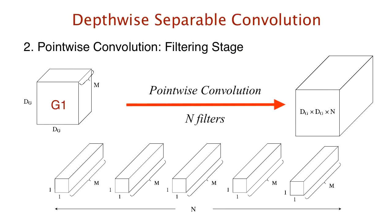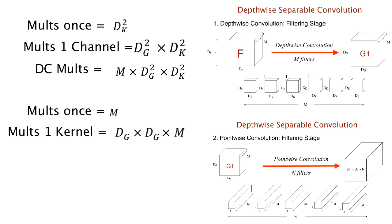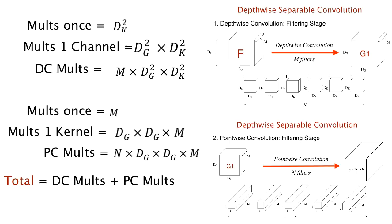For the pointwise convolution phase, the kernels have shape 1 × 1 × m, so one convolution requires m multiplications. Applied to the entire output of the first phase with width and height dg, the total for one kernel is dg² × m. For n kernels, this becomes n × dg² × m. The total number of multiplications is the sum of both phases: m × dg² × dk² + n × dg² × m, and we can factor out m × dg².